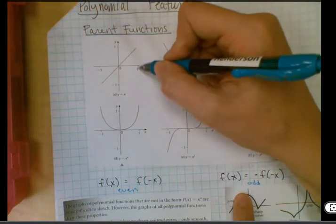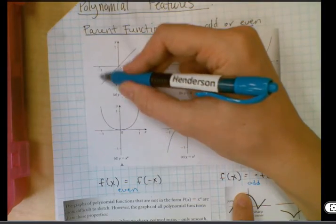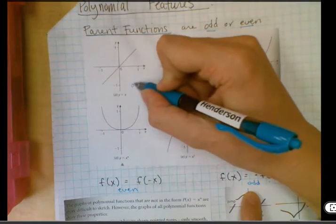So here one gives us positive one and negative one gives us negative one. So this must be odd.